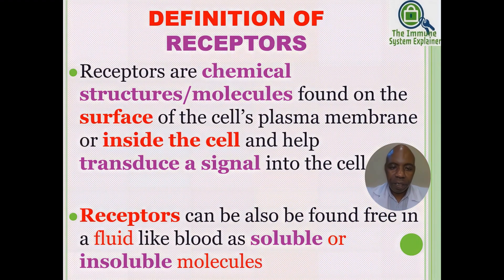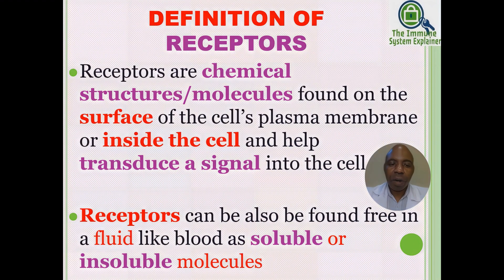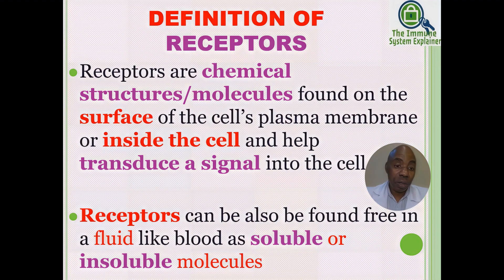Let's define receptors. Receptors are chemical structures or molecules found on the surface of a cell's plasma membrane or inside the cell, and they help transduce signals into the cell. Receptors can also be found in fluids like blood as soluble or insoluble molecules.